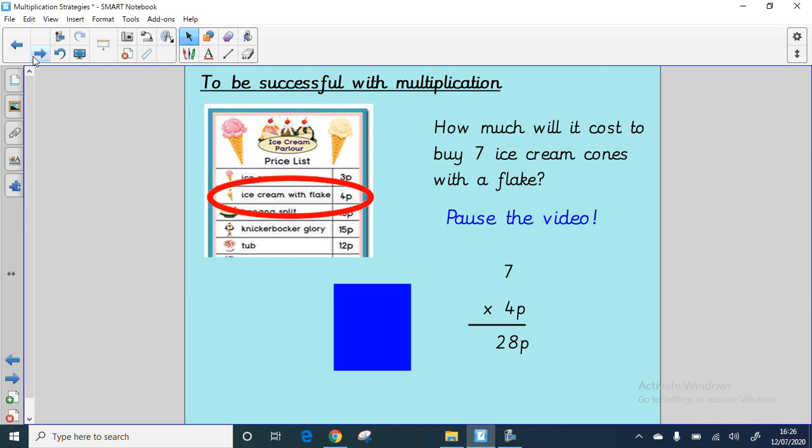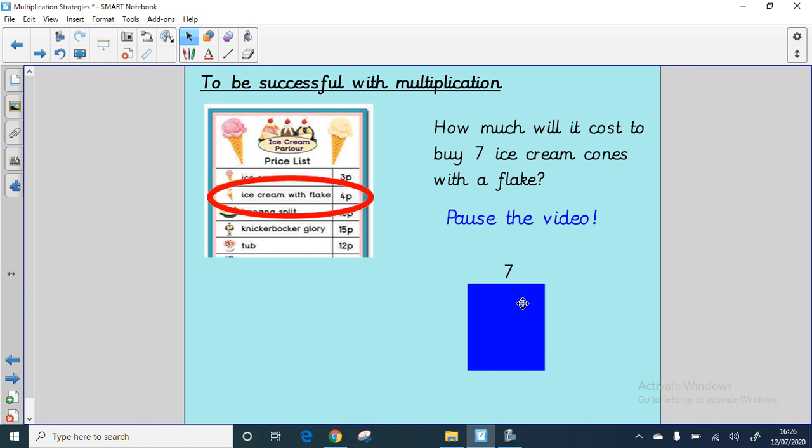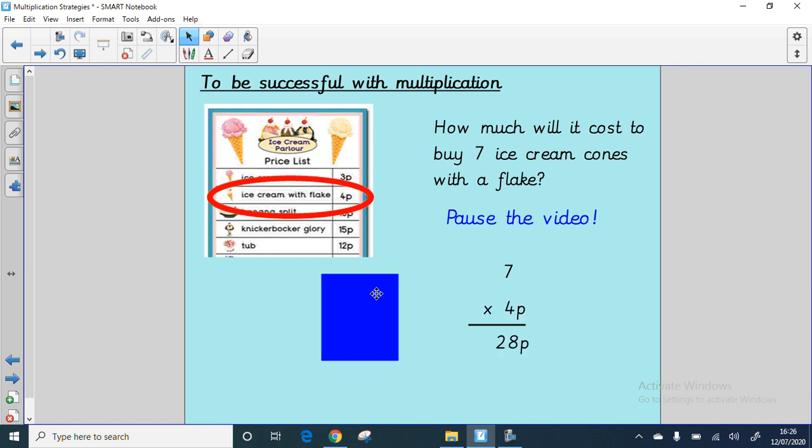How much will it cost to buy seven ice cream cones with a flake? I can see here they're incredibly good value, only four pence each. I wish that was true in the real world. Seven of those four pence each. In fact, I've already uncovered the answer here. We know the correct answer is 28p. Seven lots of four equals 28. You can count in fours. If you hold up your seven fingers: four, eight, twelve, sixteen, twenty, twenty-four, twenty-eight.